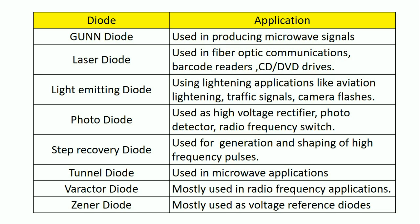The first diode is the Gunn diode, which is used in producing microwave signals.